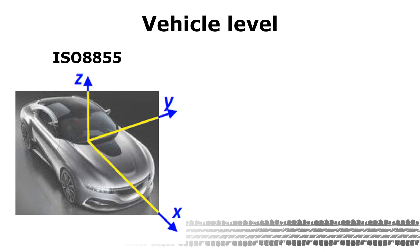Let us start at the vehicle level because the international ISO standard 8855 starts here. The standard defines the directions x, y and z. X is forward, y is to the left and z is upwards.